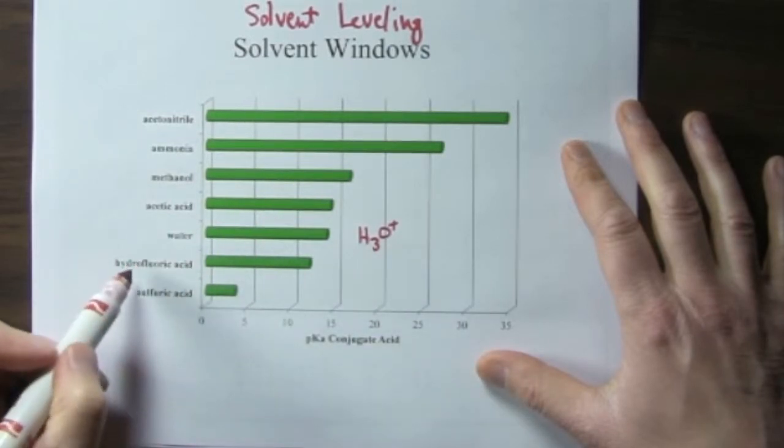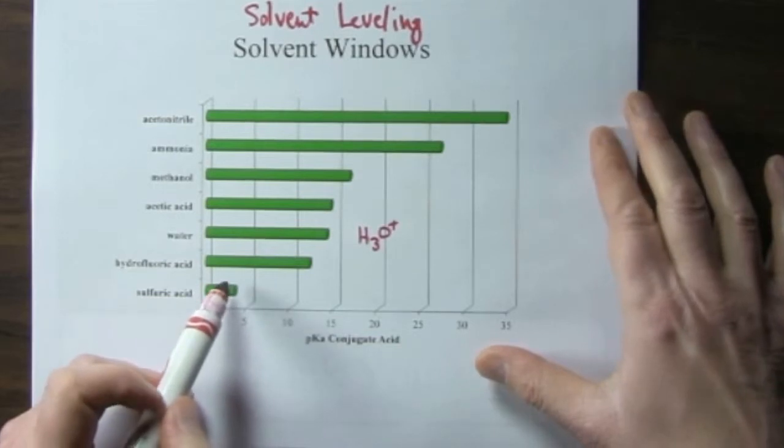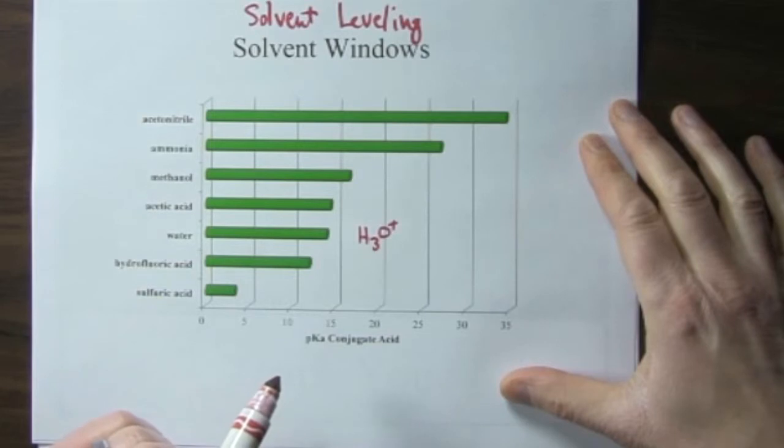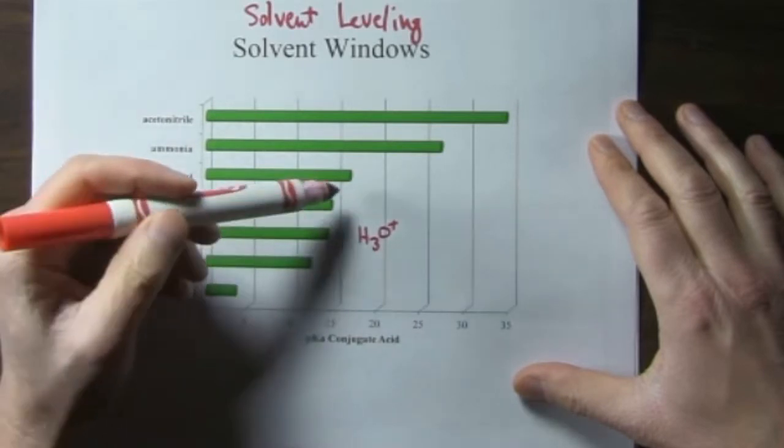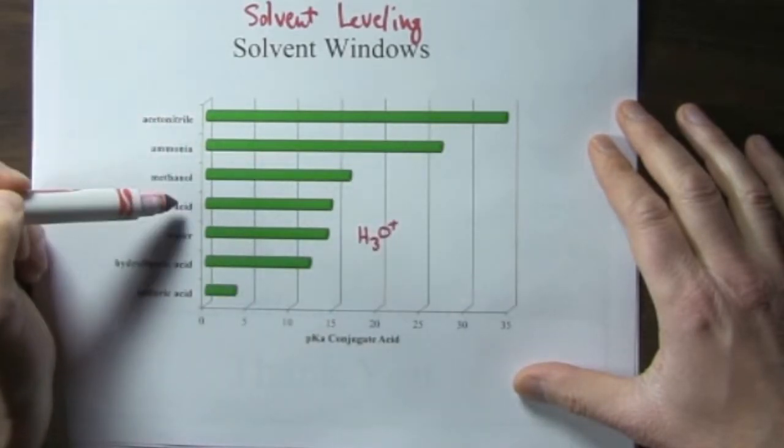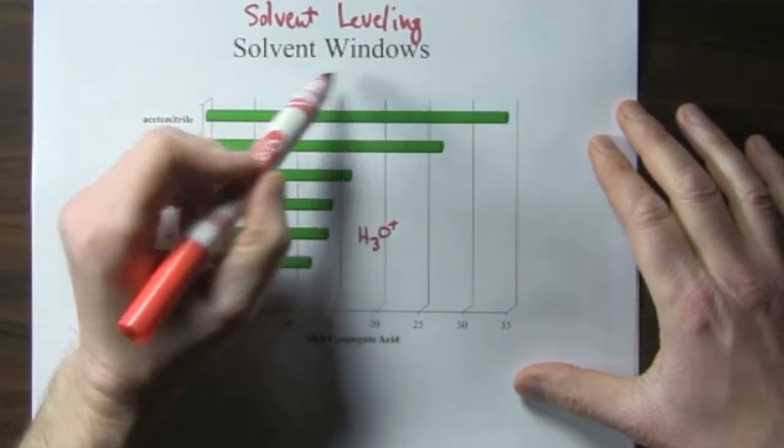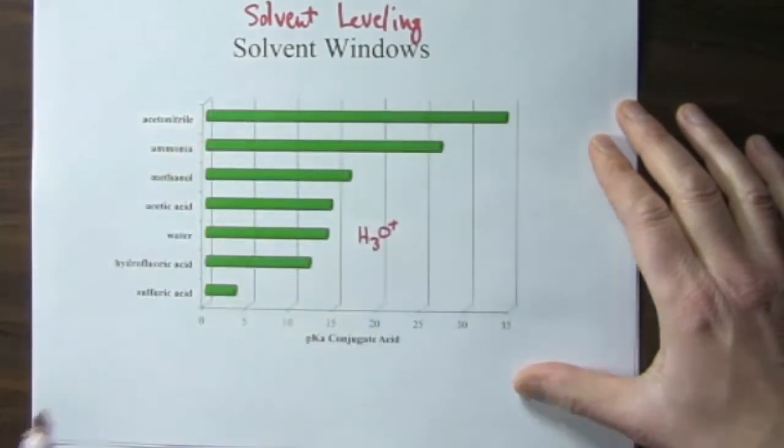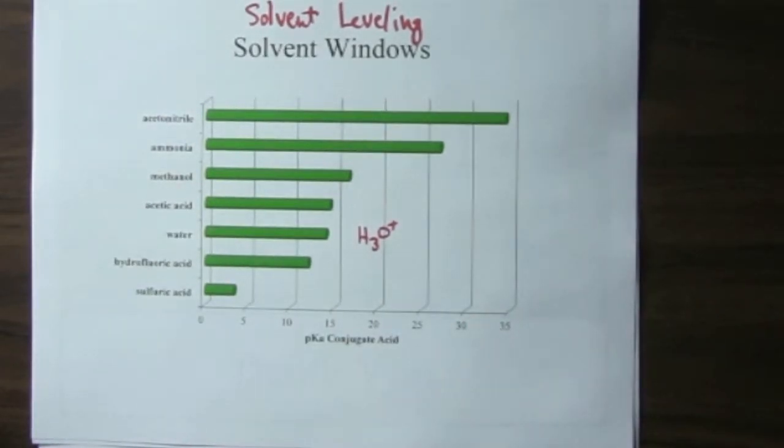But we could use other solvents, sulfuric acid, hydrofluoric acid. And the pKa of their conjugate acid is lower. And so that means that stronger acids can exist in these solvents. On the other hand, in these solvents, it has a higher pKa for the conjugate acid. And so stronger bases can exist in these solvents. This is called a solvent window, the pH range which species can exist in the solvent without reacting with the solvent.